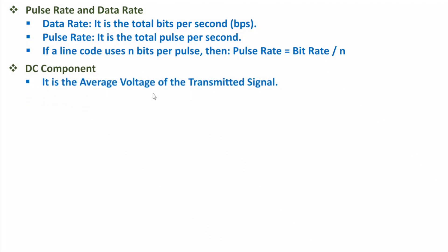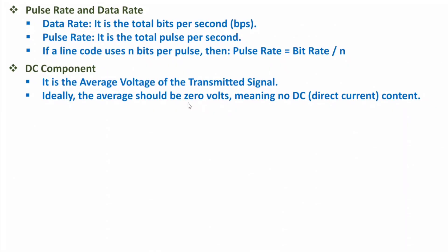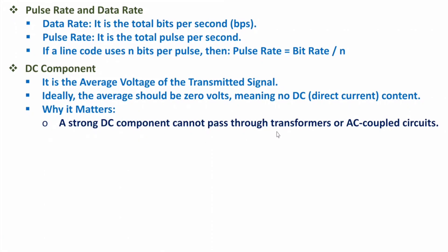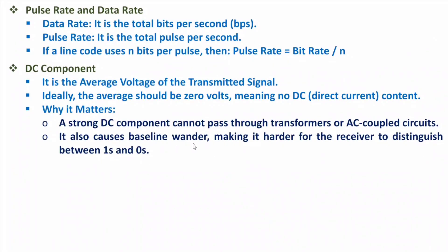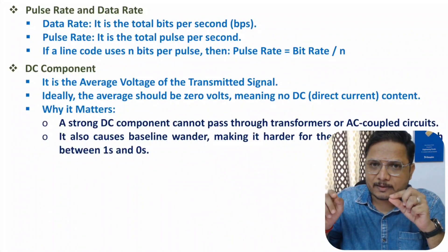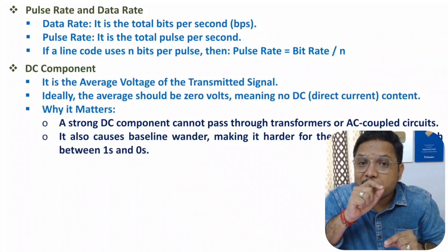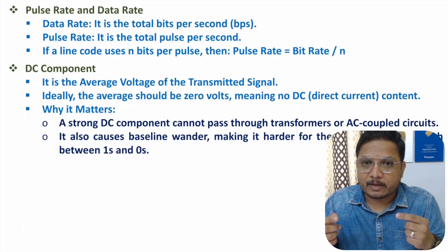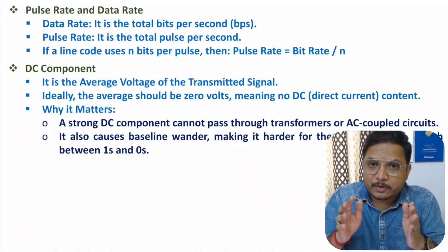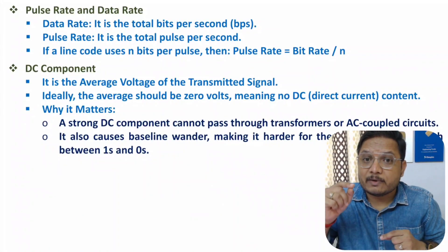The third characteristic is DC component — the average voltage of the transmitted signal. Ideally the average voltage should be zero, meaning no DC content. A signal with a DC component cannot pass through a transformer or AC-coupled circuit. Also, DC component may cause baseline wander: if you have consecutive zeros or ones, there will be a slow drift in the signal that may cause errors.